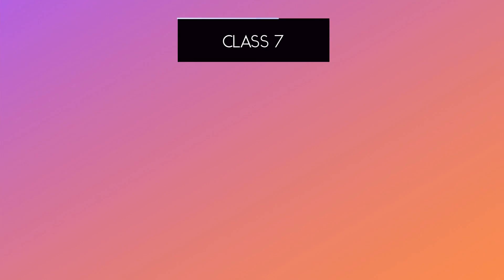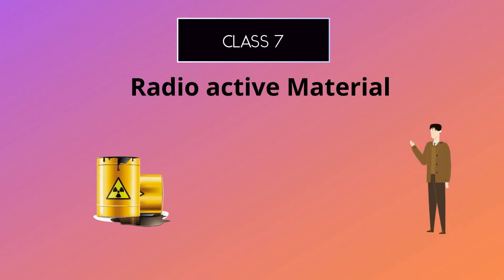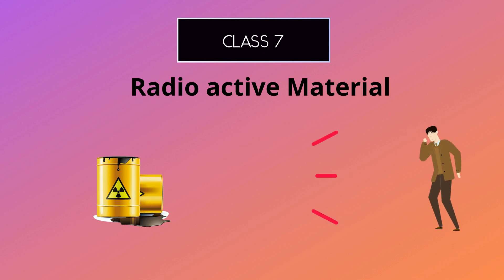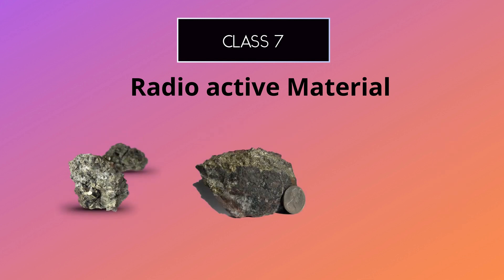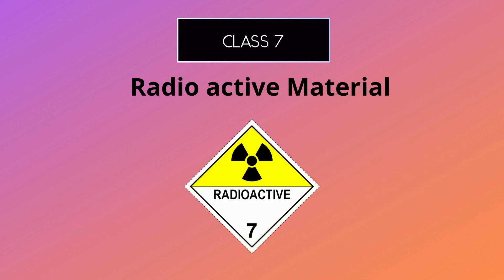The seventh class of dangerous goods is radioactive materials. This includes anything that emits ionizing radiation, which can be harmful to living organisms. This can include things like uranium, plutonium, and medical isotopes. The symbol for radioactive materials is a yellow and black trefoil with number seven.